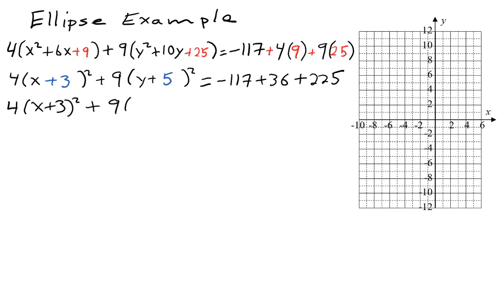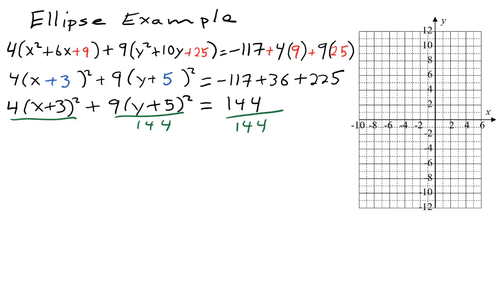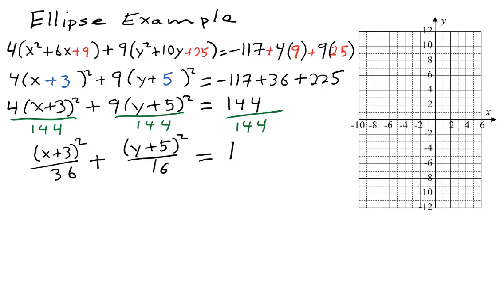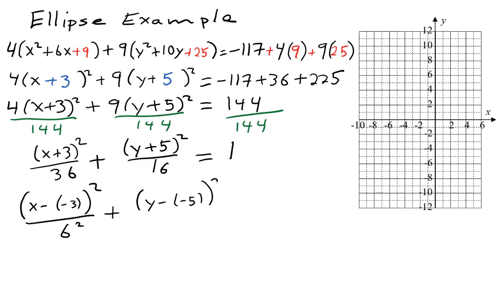Now we have completed squares. The constant on the right should be 1, but it's currently 144, so we divide by 144 and reduce the fractions. We get x plus 3 quantity squared over 36, plus y plus 5 quantity squared over 16, equals 1. For the final standard form touches, we write additions as subtraction of negatives: x minus negative 3 quantity squared, and y minus negative 5 quantity squared. The denominators are written as squares: 36 is 6 squared and 16 is 4 squared. This gives us a center at negative 3, negative 5.